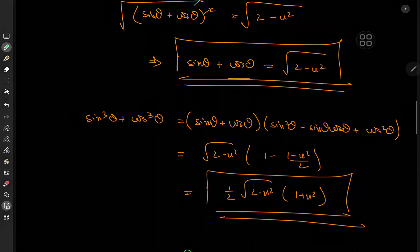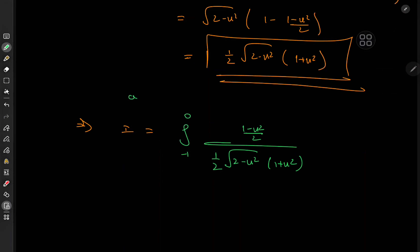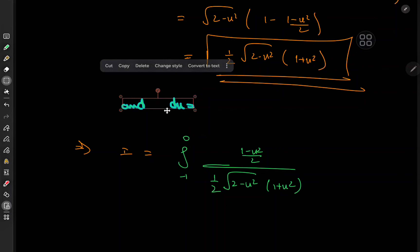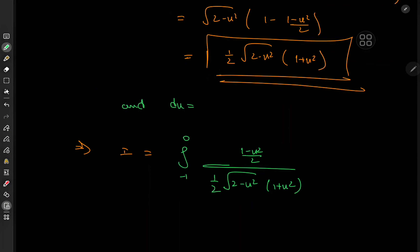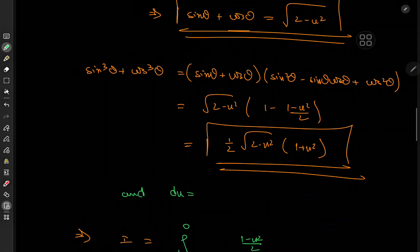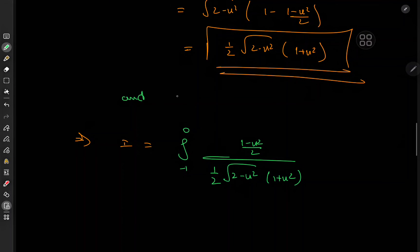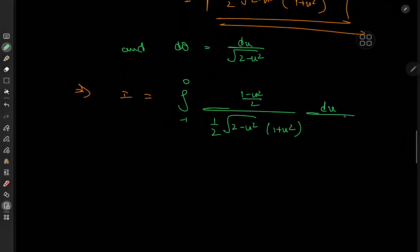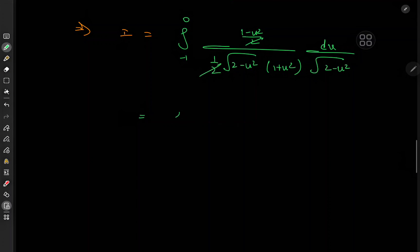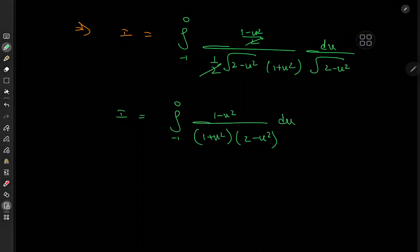We are left with the integral from −1 to 0 of (1 − u²) over (1 + u²) du — a nice rational function for which we need a partial fraction decomposition. Let me refer to my notes and write this directly: the decomposition gives (2/3)·∫du/(1 + u²) minus (1/3)·∫du/(2 − u²), both from −1 to 0, requiring one further decomposition on the second term.